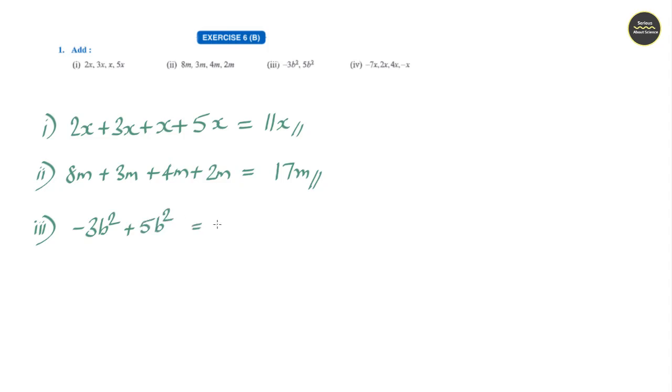Question number 3: minus 3b square plus 5b square. The answer would be 2b square.